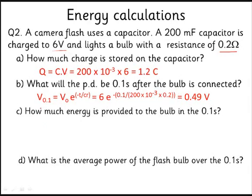How much energy is provided to the bulb? Now there's a bit of a trap for you here because the temptation is to say, oh I know this because I can do ½CV², and I can do V of 5.51 volts because it's fallen from six to 0.49. But you can't do that.